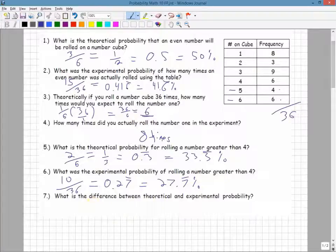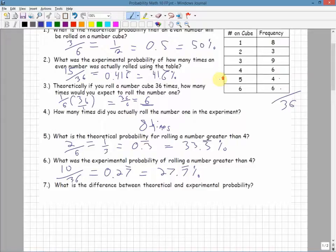Number 7, what is the difference between theoretical and experimental probability? The theoretical probability is if nothing is actually experimented on. We just look at the numbers and we say, this is a perfect cube, no imperfections at all. The actual experiment, though, when we actually conduct the experiment, there are a lot of other external factors that can weigh in on changing the results from the theoretical probability.